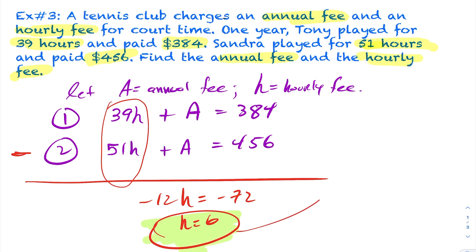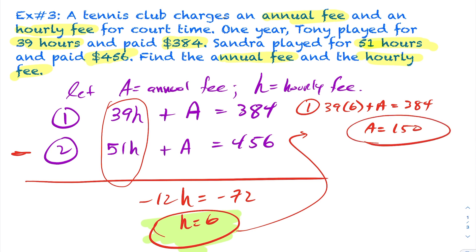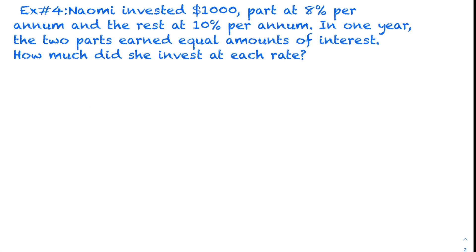So now we can sub it into either equation and solve for the annual fee. I'll sub it into 1. And solving for A here, we get 384 minus 39 times 6, and you'll end up getting $150 of an annual fee. So this tennis club is charging a fixed fee of $150 plus $6 per hour that you play. And this would be example three. All right, moving on to example four.